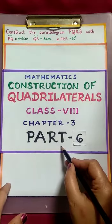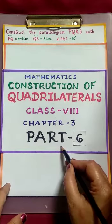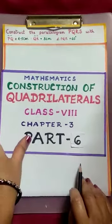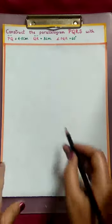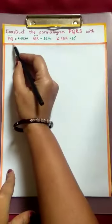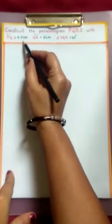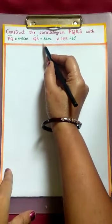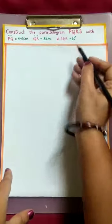Students, in part 6 of this chapter, today we learn how to construct a parallelogram with given measurements. Construct the parallelogram PQRS with PQ 4.5 cm, QR 3 cm, angle PQR 60 degrees.